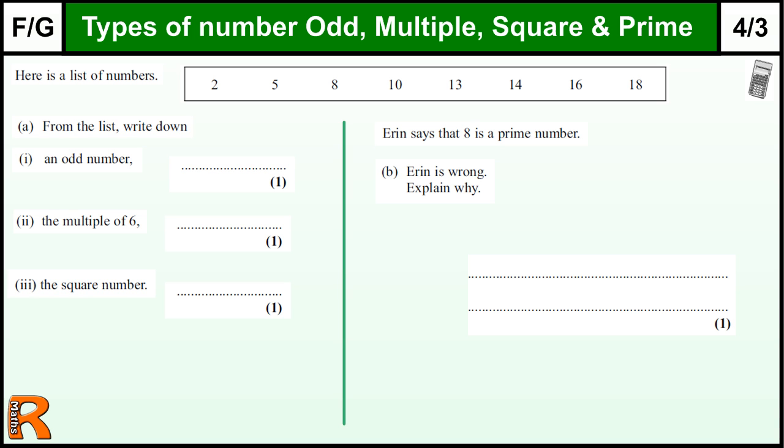Here we have a question on the types of numbers - odds, multiples, squares, and primes. Very typical foundation question, nice early on question where we've got a list of numbers and we have to pick out these particular types of numbers.